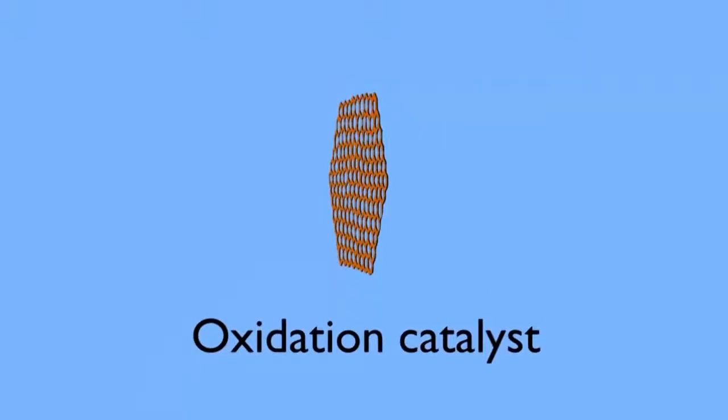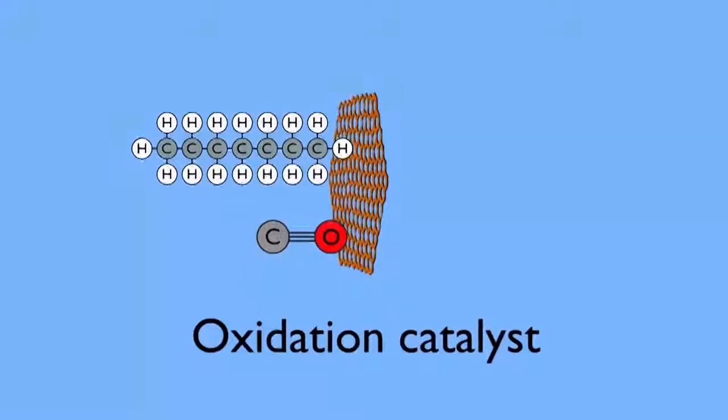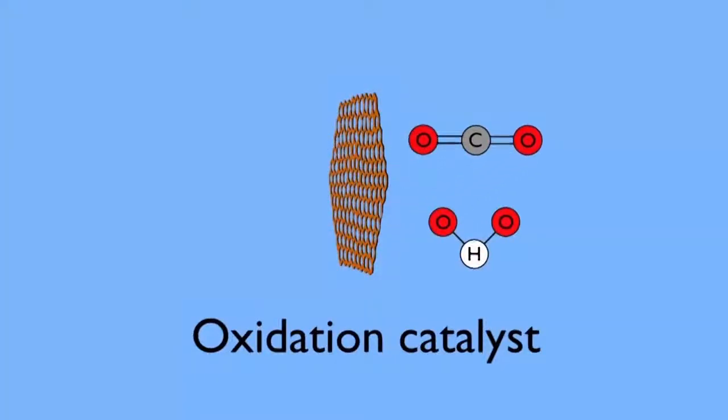The oxidation catalyst is the second stage of the catalytic converter. It oxidizes the unburned hydrocarbons and carbon monoxide by burning them over a platinum and palladium catalyst. The equation for this is shown here.